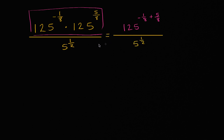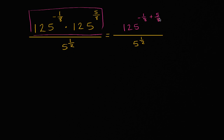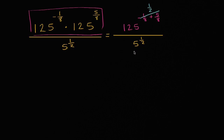So these are equivalent. All I did is add the exponents, because I had the same base and we were taking the product of both 125 to the negative 1/8th and 125 to the 5/8th. And negative 1/8th plus 5/8th — well that is 1/2. So this right over here is 1/2, giving us 125 to the 1/2 over 5 to the 1/2.